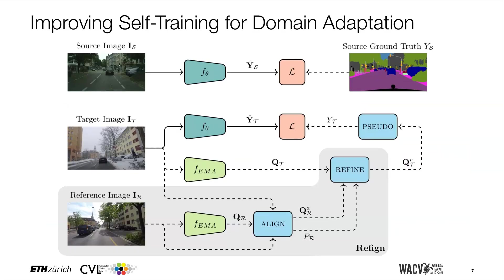Overall, our method can be added to any domain adaptive self-training pipeline, as shown in this slide. Current domain adaptive self-training methods include supervision of the model f-theta by the source samples, as well as pseudo label generation on the target sample through an exponential moving average model, shown here as f-EMA. Our method, shown as the gray shaded part, feeds the reference image through the exponential moving average model to obtain reference predictions, then warps these to align them with the target predictions, and finally refines the latter by leveraging both the warped reference and the corresponding uncertainty map.